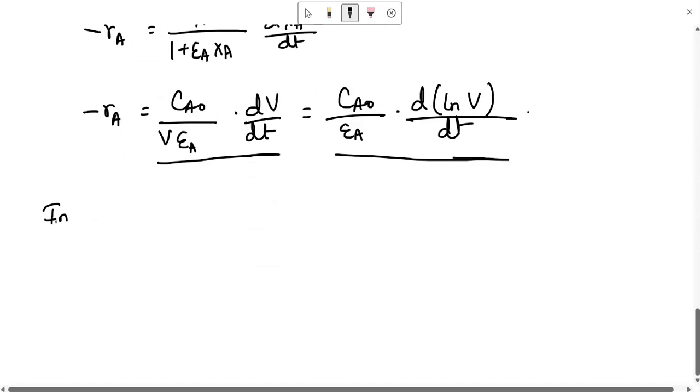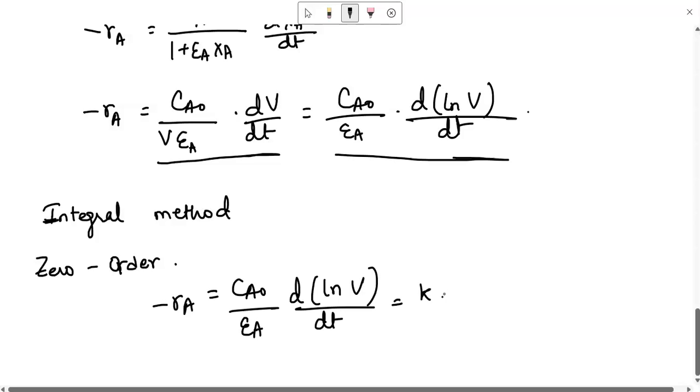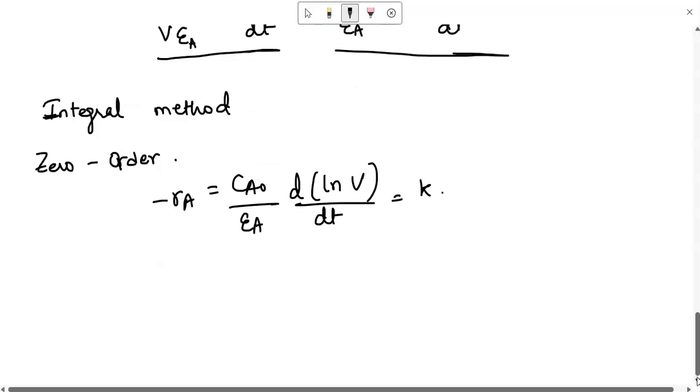Let us see for integral method of analysis, let us see for 0 order. For a homogeneous 0 order reaction, we can write minus rA equals to CA0 by epsilon A d(ln V)/dt equals to K. We know that basically we write K because CA to the power 0, that becomes 1, therefore it becomes K. Now if you integrate this, the integrated form becomes CA0 by epsilon A ln(V/V0) equals to KT.